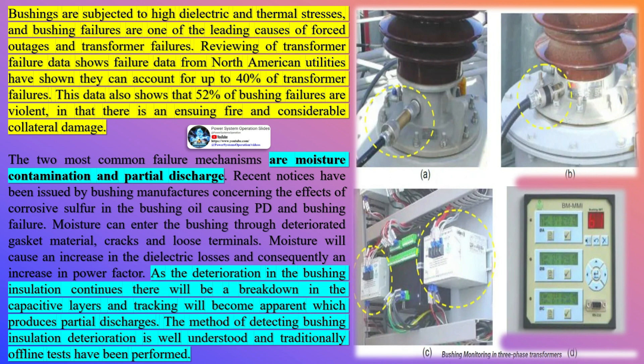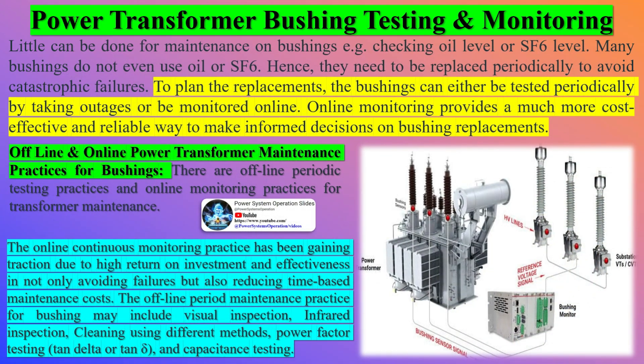On average, one out of four transformer failures is due to issues with the bushings. 50% of bushing failures end in fires. Many failure mechanisms on bushings occur in a very short period of time, measured in days to weeks. Some failures are temperature and voltage dependent, making them difficult to simulate during offline tests.